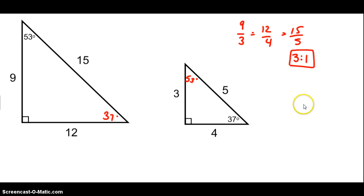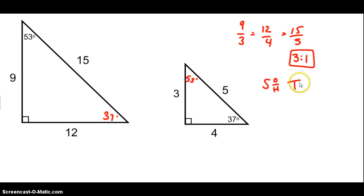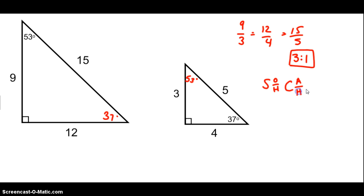Now, what does that mean in terms of sine, cosine, and tangent? Remember SOHCAHTOA: sine is opposite over hypotenuse, cosine is adjacent over hypotenuse, and tangent is opposite over adjacent.